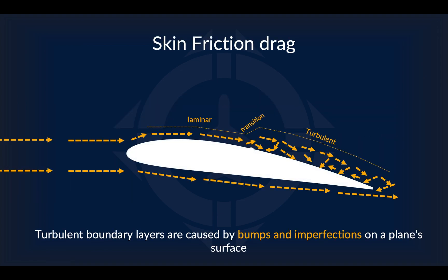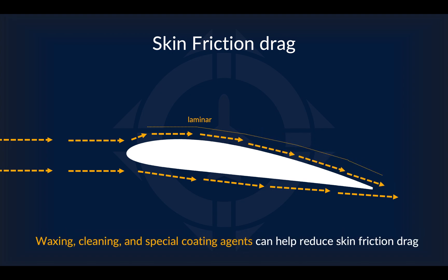Small bumps and imperfections on a plane's surface — even small insects that get hit by the plane — can trip the airflow going past it, transitioning it from laminar to turbulent flow. One goal in aviation is to delay this transition as much as possible to reduce skin friction drag. To reduce skin friction drag, you can smooth the exposed surfaces of the airplane, usually through cleaning, waxing, polishing, or applying surface coating. This delays the transition from laminar flow to turbulent flow.